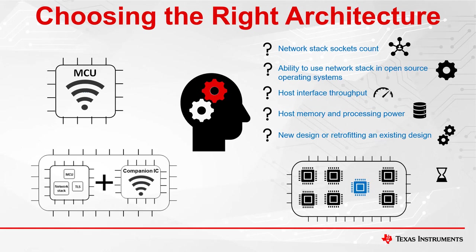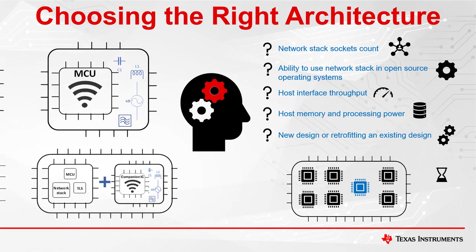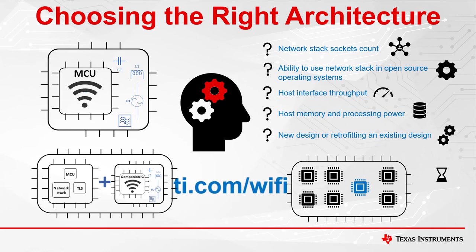Regardless of the final architecture decision, Texas Instruments can help. At TI, we offer both architectures as part of our Wi-Fi portfolio. In addition, we offer solutions as both ICs and fully certified modules. We hope that you can now effectively choose the right architecture and device for your system. If not, TI engineers are here to help you choose. For more information, visit TI.com/wifi.